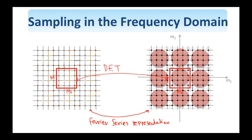This mapping from an N₁×N₂ image to N₁×N₂ frequency-domain samples is the discrete Fourier transform, which we will study in detail next. An N₁×N₂ image can be represented uniquely by N₁×N₂ samples of its spectrum. It is important to keep in mind that behind the DFT there are discrete periodic two-dimensional signals in both the spatial and frequency domains, since many properties of the DFT can be derived and understood by considering these periodic extensions.